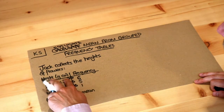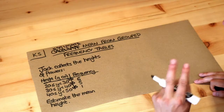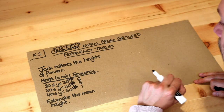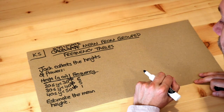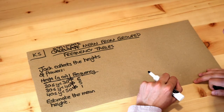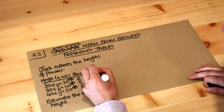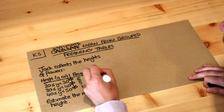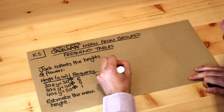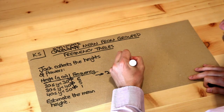We put the midpoints of each range and then do exactly what we did before for an ungrouped frequency table — each midpoint height times the frequency. So we do 25 times 6, which is 150.